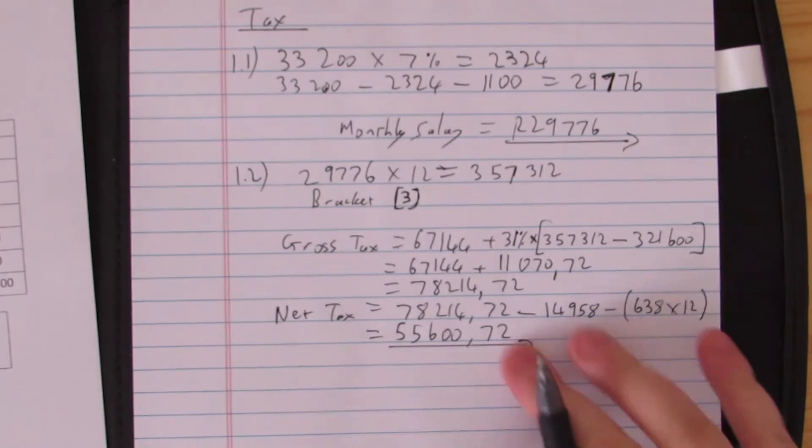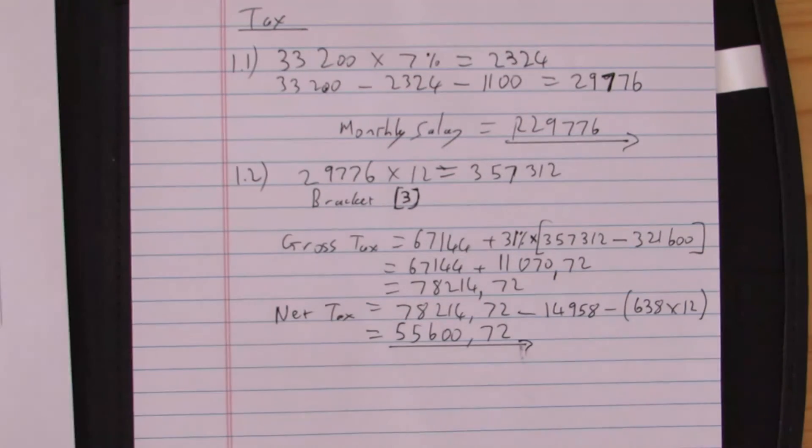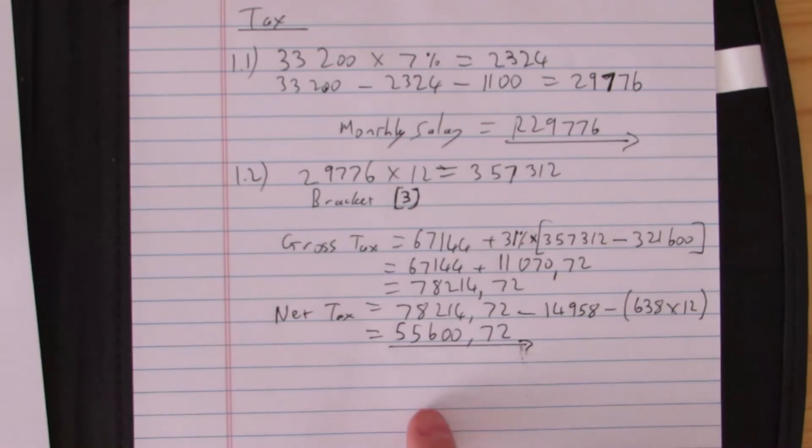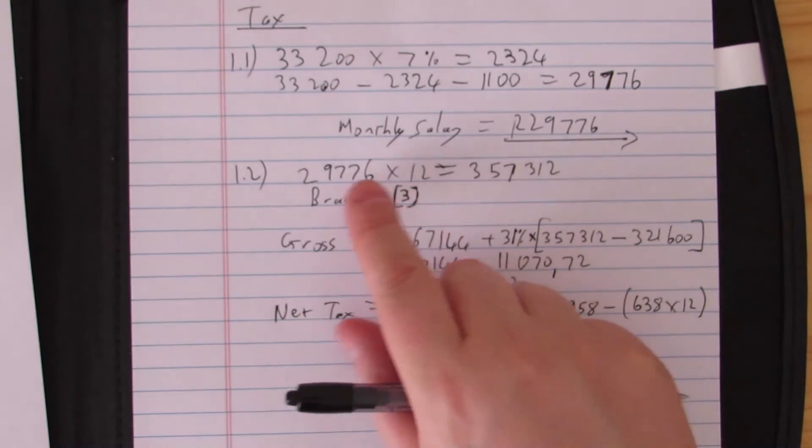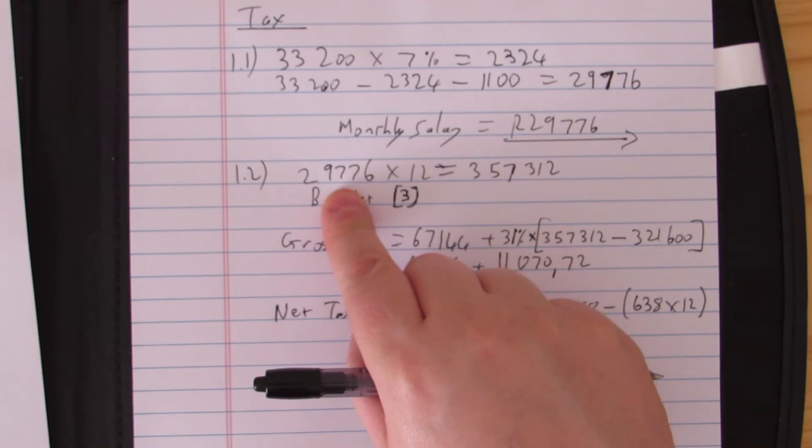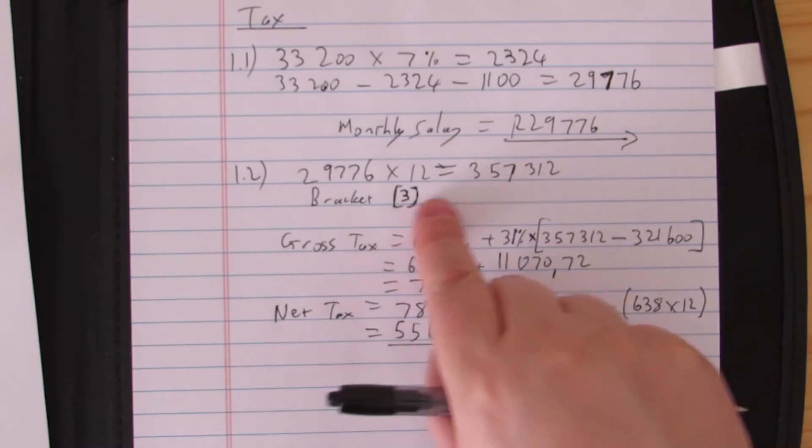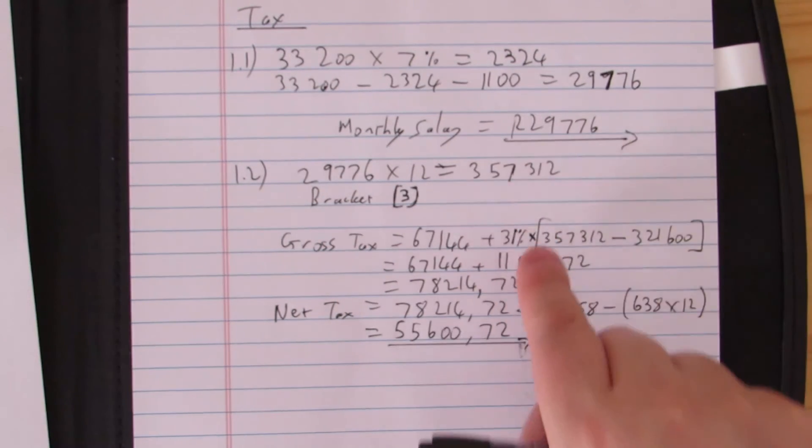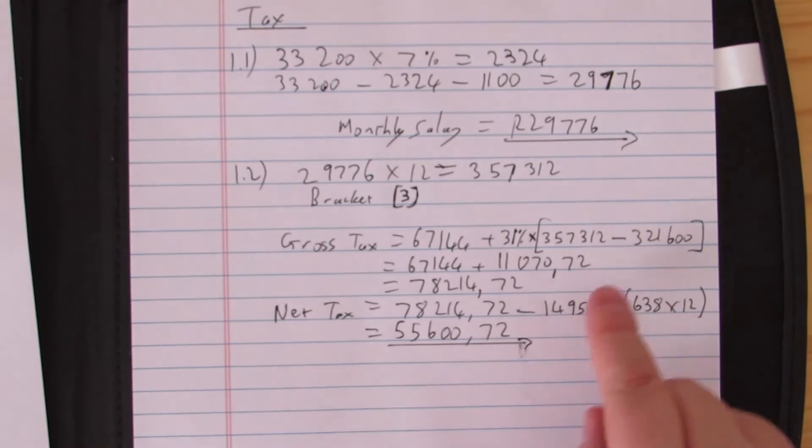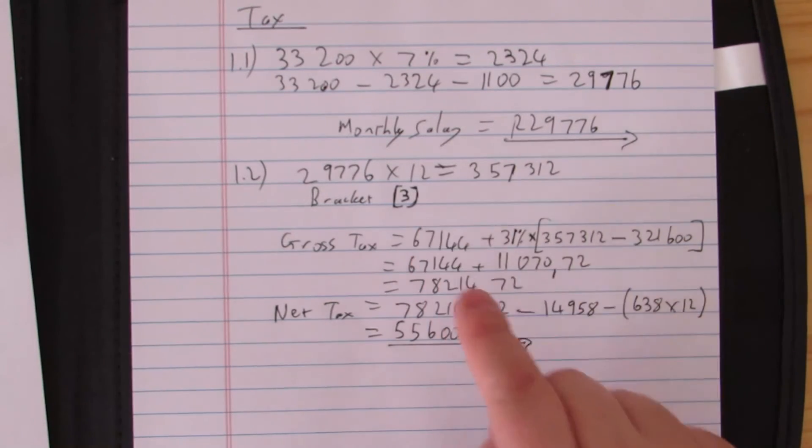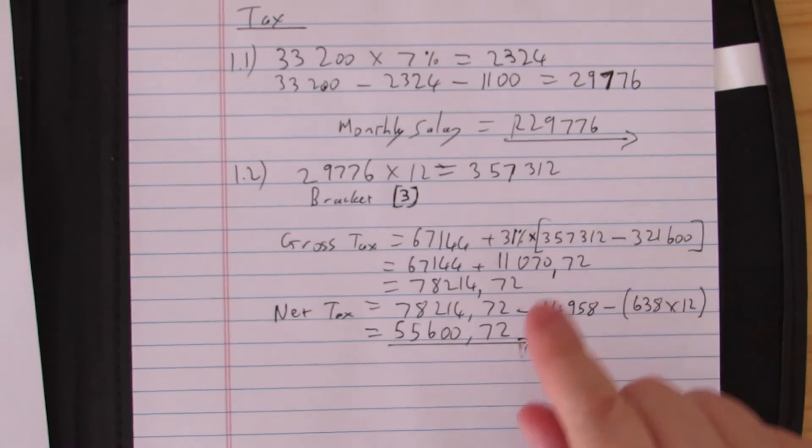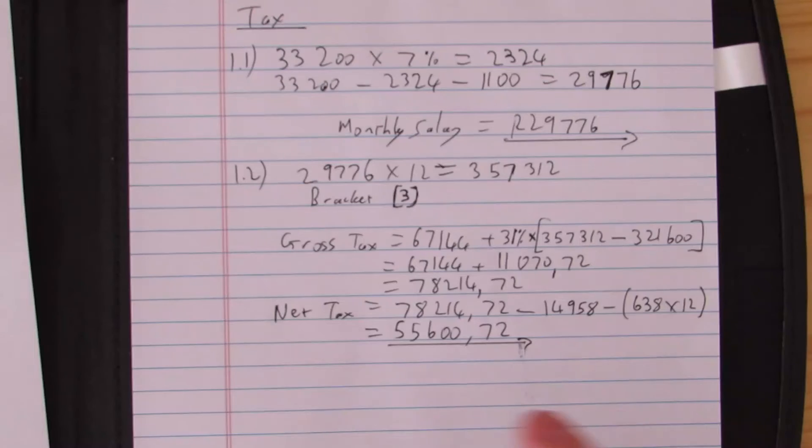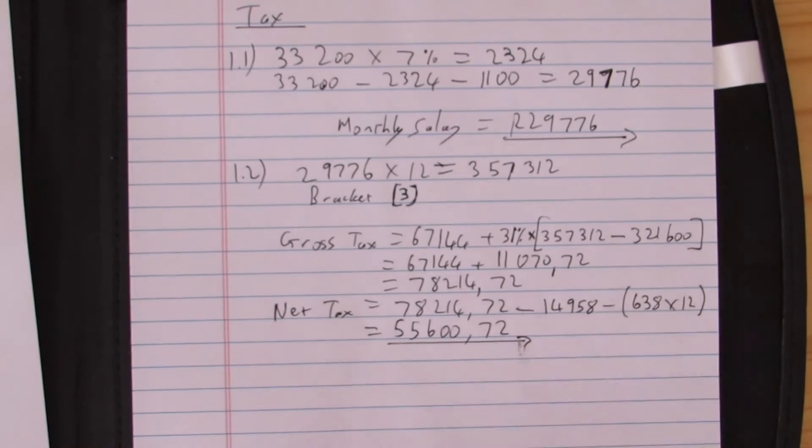Let's just go over that again. You find the tax bracket by multiplying the monthly salary after deductions by 12 to get the annual salary. Look up on the table for the right tax bracket. Use the right formula from each line on the tax bracket. If you find tax bracket three, this is the formula we use. Then we take off our rebates and credits, and that gives you your final amount for that.